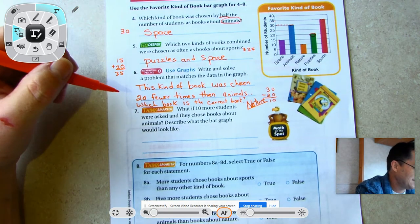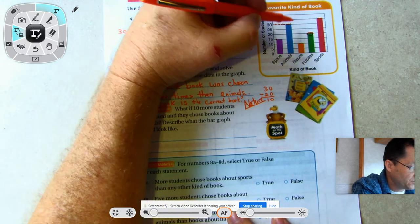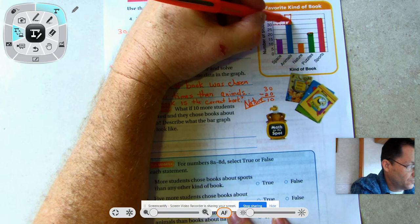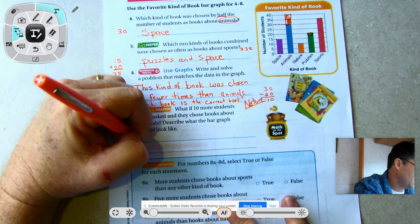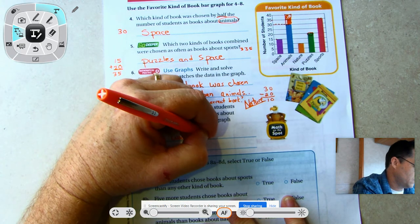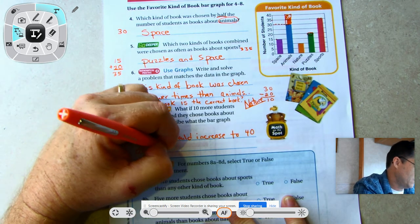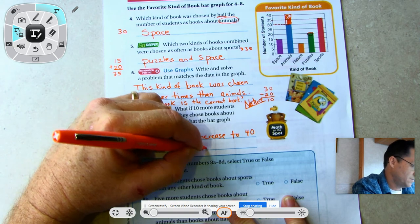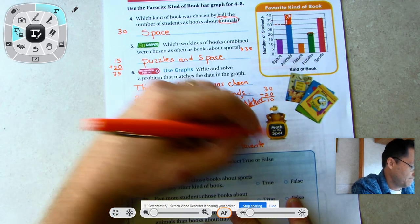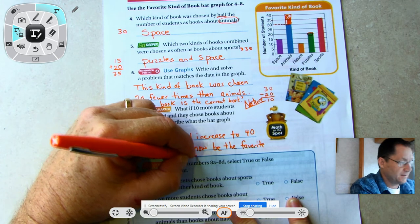What if 10 more students were asked and they chose books about animals? Describe what the bar graph would look like. So 10 more students chose animals. Animals would increase to 40, right? And it would now be the favorite kind of book because it's longer than sports.